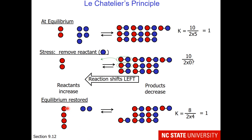Once I break apart those 2 compounds, equilibrium has been restored. I now have 4 red spheres and 2 blue spheres, so my product is 8 on the numerator and 8 on the denominator. I have returned to equilibrium. We disturbed it by removing some material from the mixture, and the reaction shifted so that equilibrium was restored.